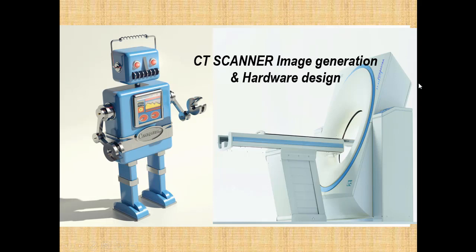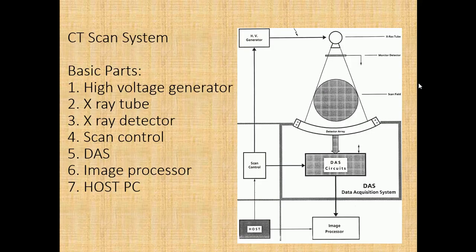Image generation and hardware design of a CT scan system. The basic parts are: one, high voltage generator; two, X-ray tube; three, X-ray detector; four, scan control; five, DAS; six, image processor; seven, host PC.